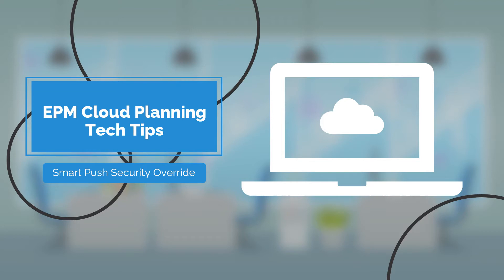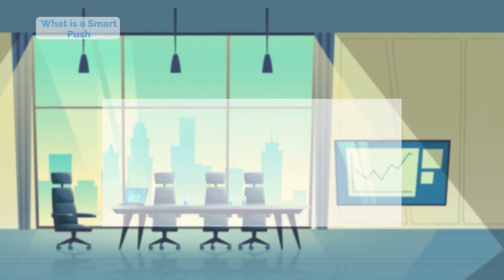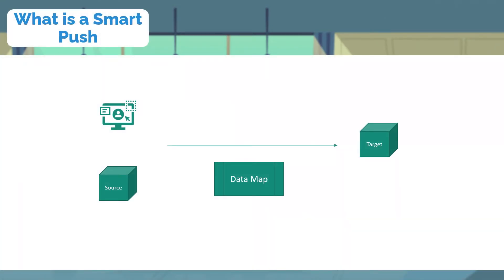Let's first define how you would push data between plan types in an EPM Cloud Planning application. A data form or a Smart View template of a data form can push data from source to target plan types using an underlying data map. Smart Push allows use of the underlying data map to push a defined scope from the data form — it could be pushing changed intersections, everything under the form, or some other override defined in the Smart Push on the form.